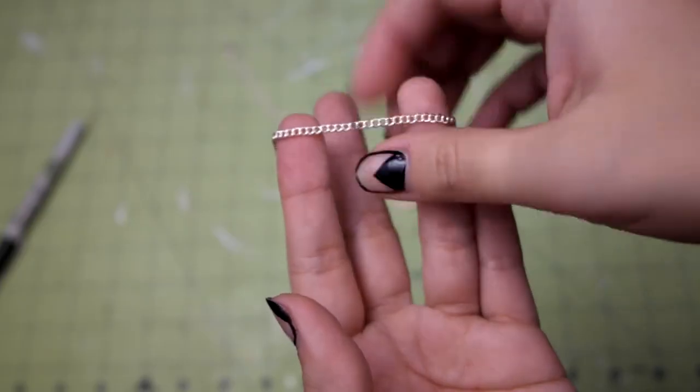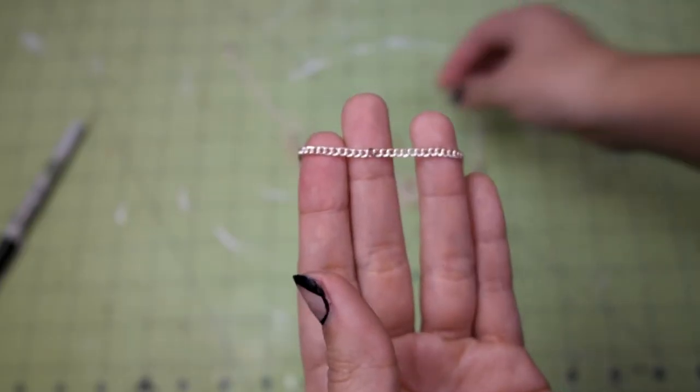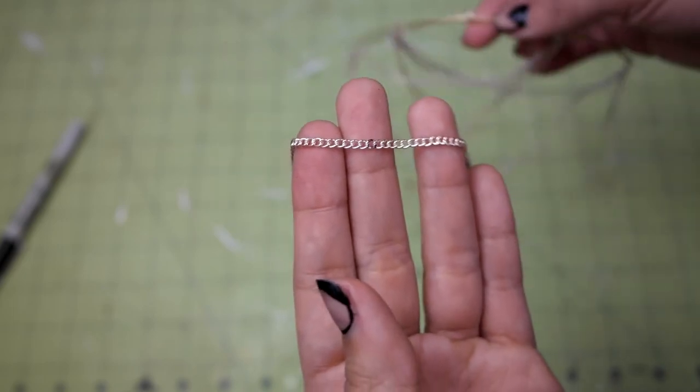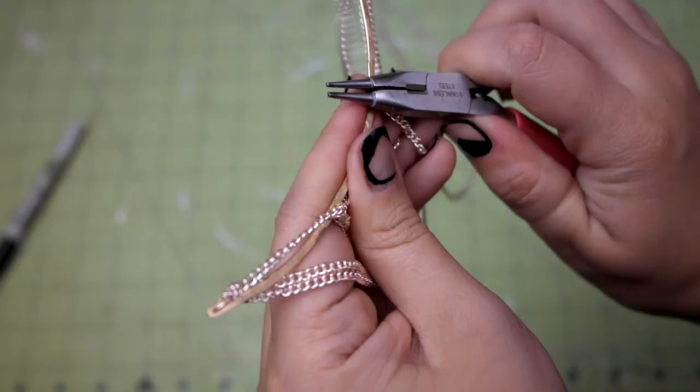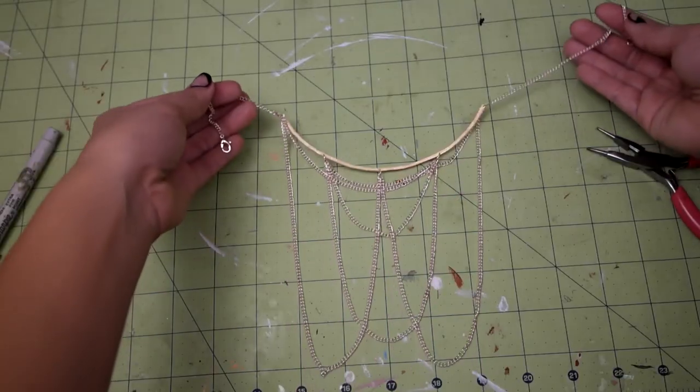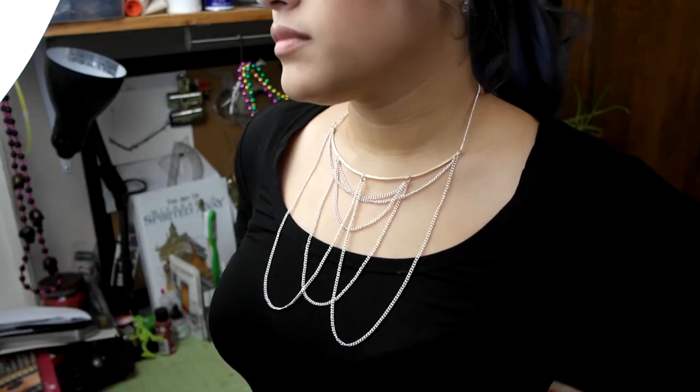So for this one, all you have to do is attach the twenty four inch length of chain at the middle mark onto this jump ring. And then you're all done. Put it on and admire your work.